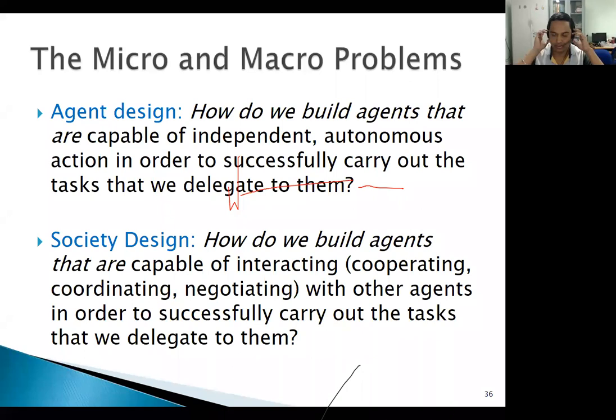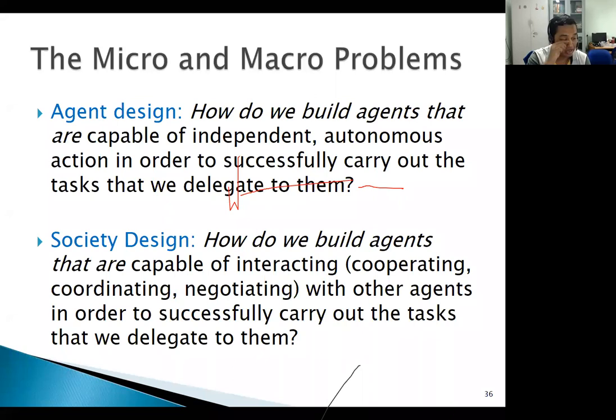When you talk about society design, you must have some kind of objective function, some constraints, obligations, and bottlenecks. These things come into the picture when you design the society.